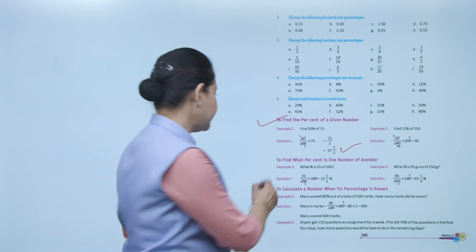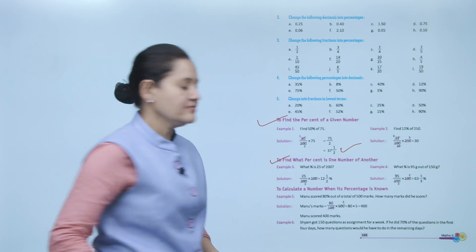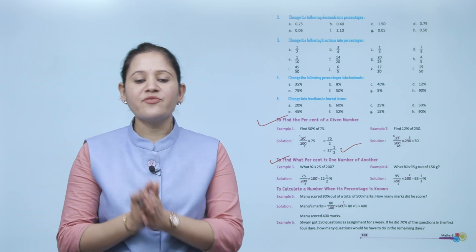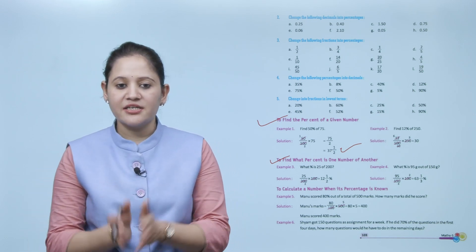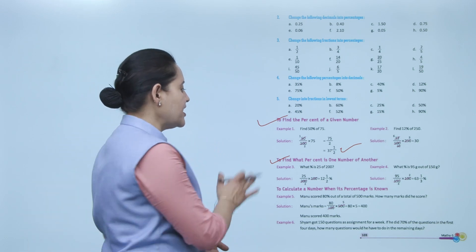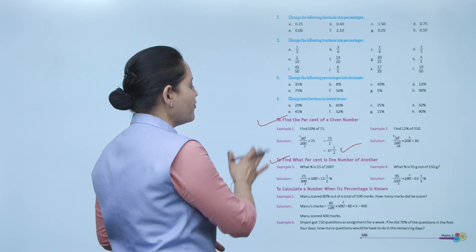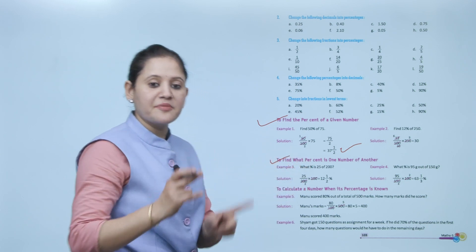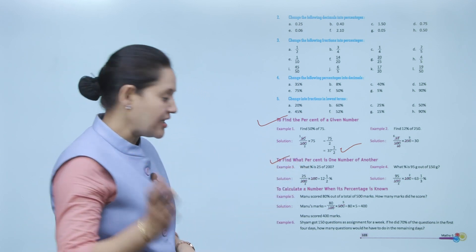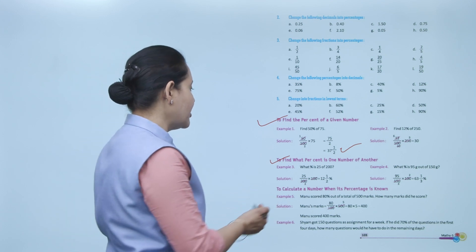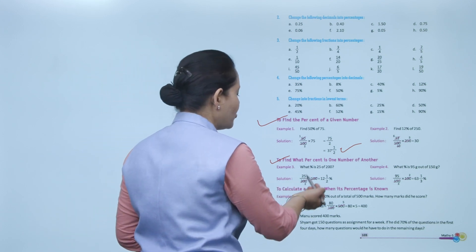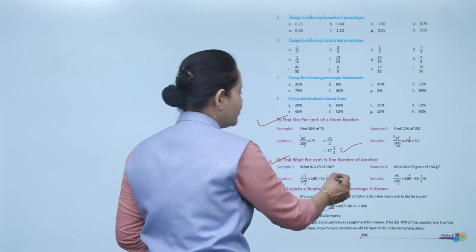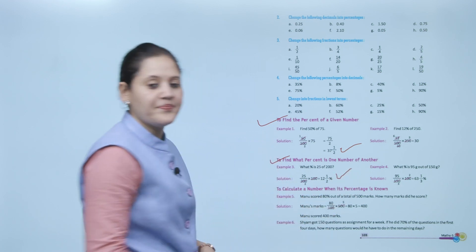Next is finding what percentage one number is of another. What percent is 25 of 200? We need to find what percent 25 is of 200, so write: 25/200 × 100 = 12½ percent.